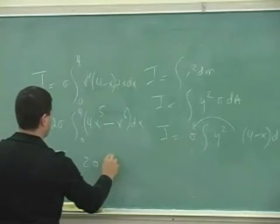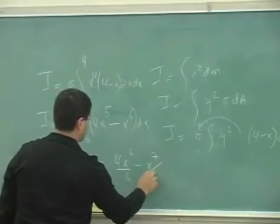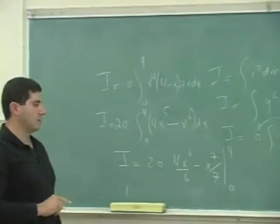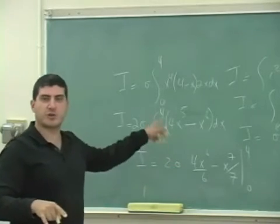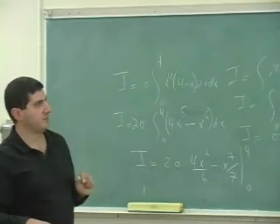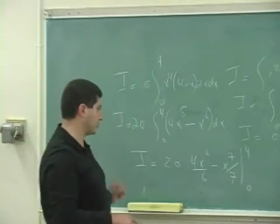Okay, and then this one will be 4X to the sixth over sixth minus X to the seventh over seventh, 0 to 4. But we're not done though. After we do this, we're going to have to do one more integral to get rid of sigma. Remember, just like cylinder, sphere, and the rod, you always do two integrals.